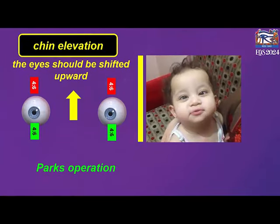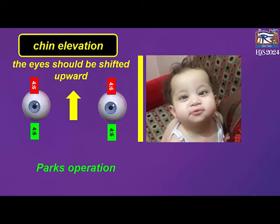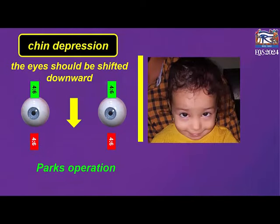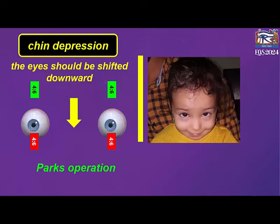In case of chin elevation, the two eyes must be shifted upward. This can be done by the Parks operation: bilateral superior rectus resection and bilateral inferior rectus recession. In chin depression, the two eyes must be shifted downward, which can be done by bilateral inferior rectus resection and bilateral superior rectus recession.